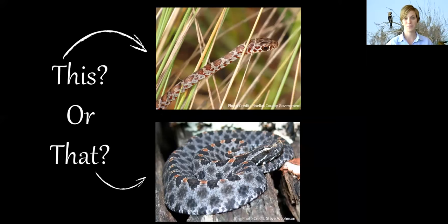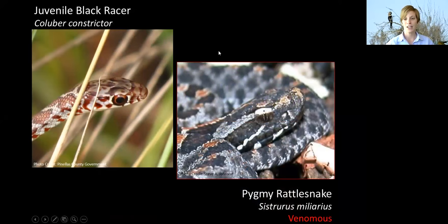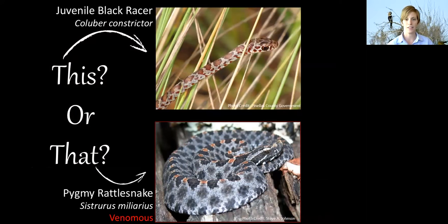Now we'll look at one more: the juvenile black racer on top versus the pygmy rattlesnake on the bottom — another venomous species here in Florida. And believe it or not, that is a black racer on top. Again, we can look at the pupils: the eyes on the juvenile black racer are quite large and easier to see. On the pygmy rattlesnake, definitely not as much. The body thickness alone can also be helpful — juvenile black racers are much skinnier than the heavier-bodied pygmy rattlesnake.